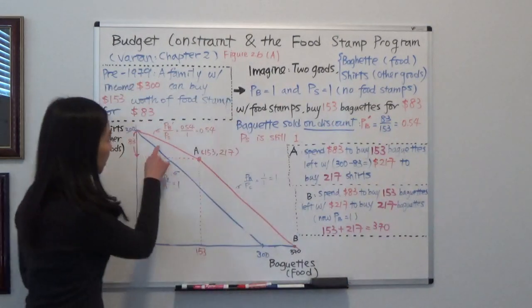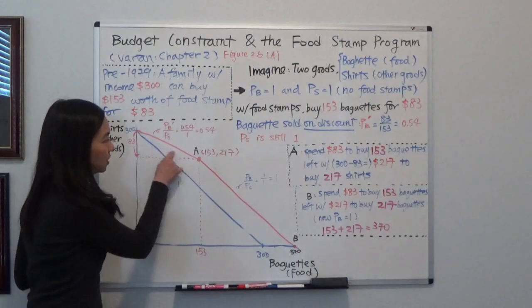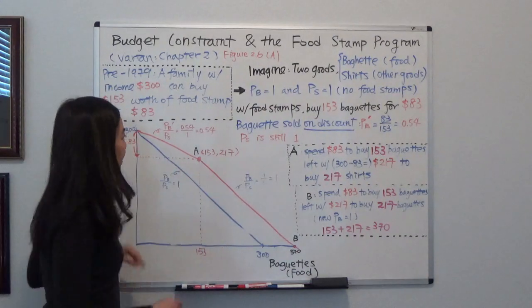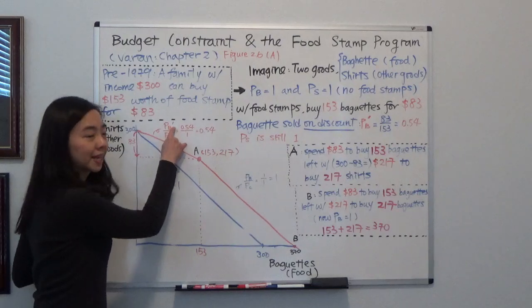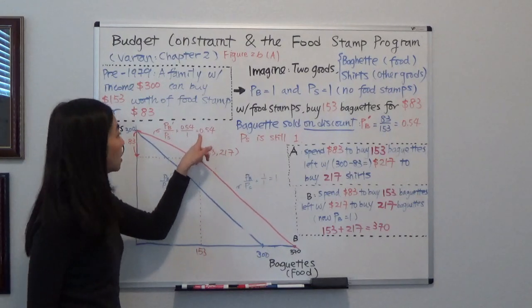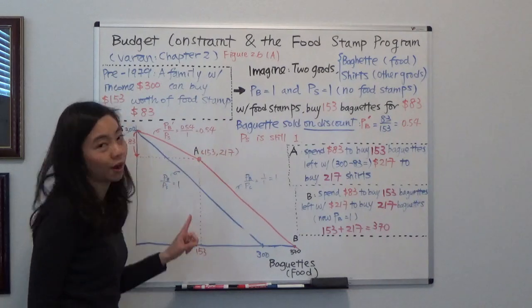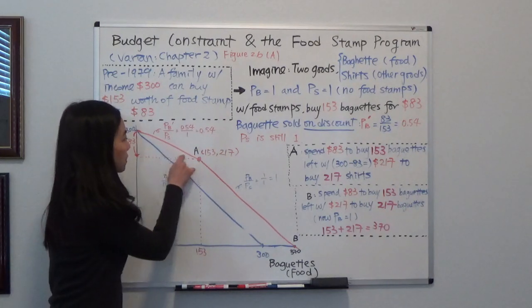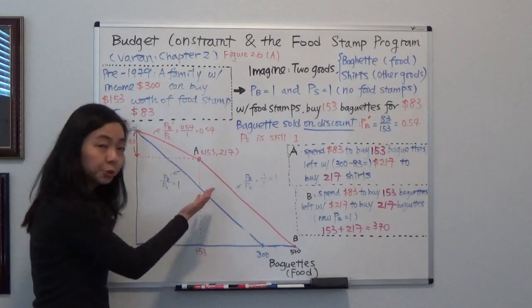So you can see that will change the shape of your budget constraint to something flatter because your price of baguette divided by the price of the t-shirt has changed to 0.54 instead of 1. It's going to become a little bit flatter, up to which point.